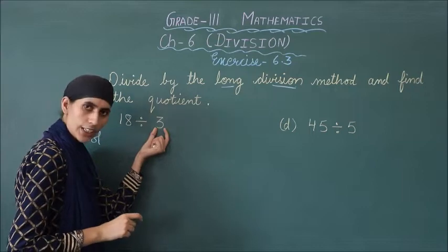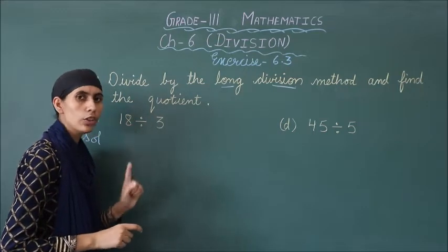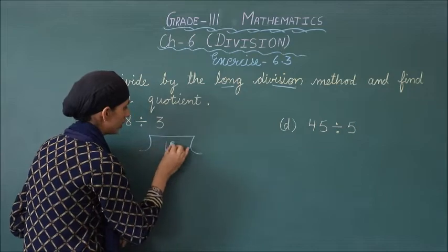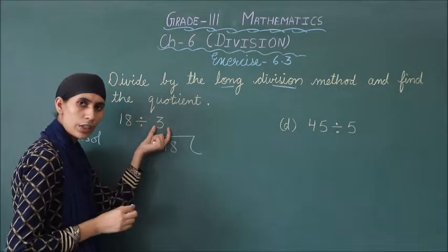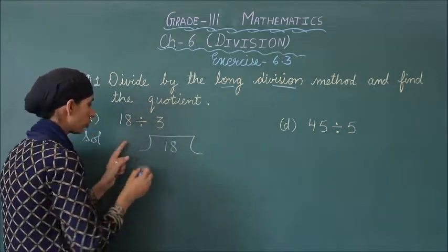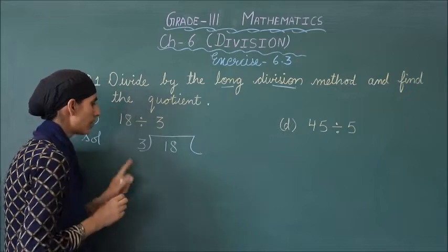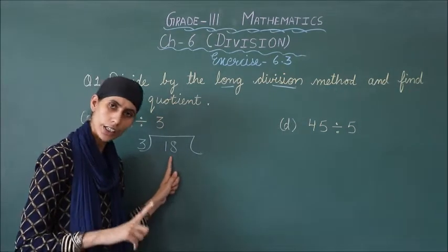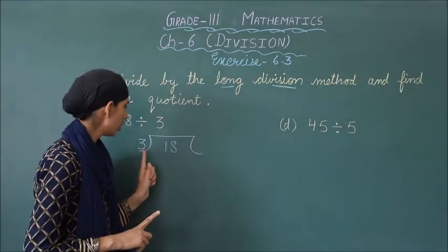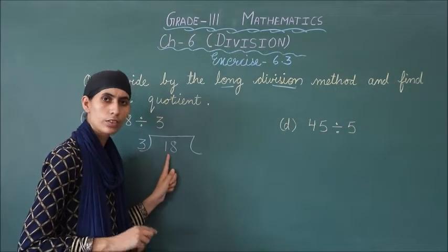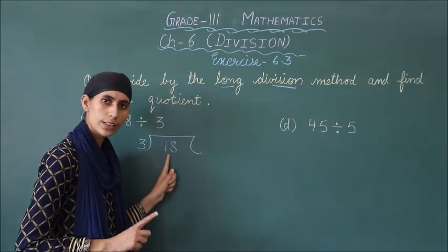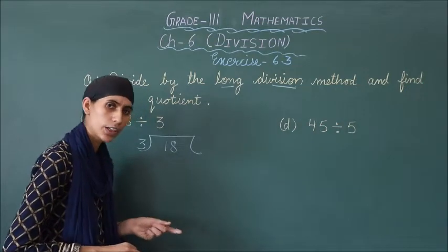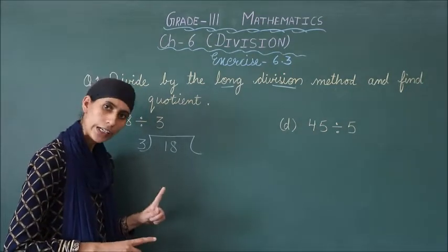To divisor se hum 3 se 18 ko divide karenge. So write down 18 like this, aur 3 aapka divisor hai to woh yahan write down hoga. Ab hum check karna hai ki 3 ki table mein 18 aata hai ya nahi. So: 3 ones are 3, 3 twos are 6, 3 threes are 9, 3 fours are 12, 3 fives are 15, 3 sixes are 18.